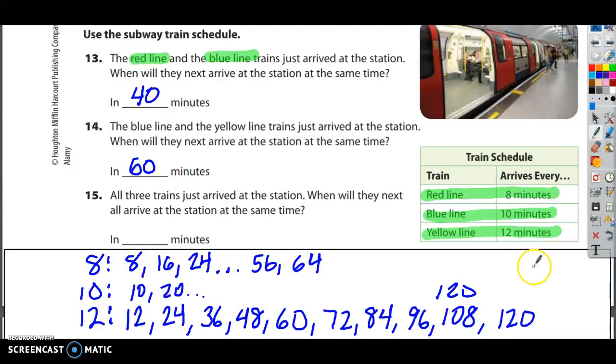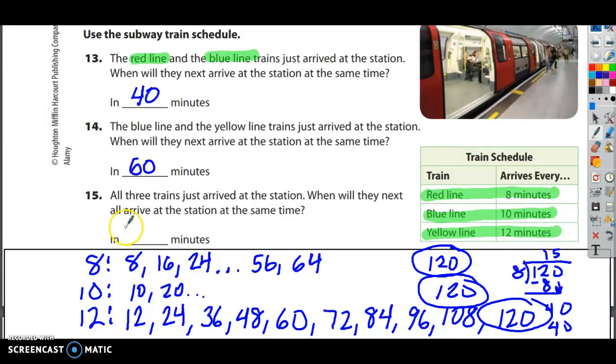And a simple way to check that is, does 8 multiply, I'm sorry, divide evenly into 120? 8 goes into 12 once. 1 times 8 is 8. And 12 minus 8 is 4. Bring down this 0. And 8 goes into 40 five times. 5 times 8 is 40. It divides in evenly. So what that means is, is that 120 is a multiple of 8. We know it's a multiple of 10. And it's also a multiple of 12. It is the first number that's a multiple of all three. The answer is 120 minutes.